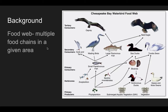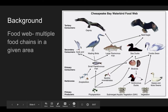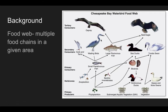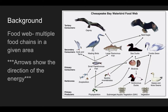We also know about food webs. A food web is multiple food chains in a given area. Here is a food web of the Chesapeake Bay water bird food web. We start out with some vegetation, either on land or in the water, and go to ducks and bivalves, up to swans and sea ducks, and eventually to eagles and osprey. Again, arrows show the direction of the energy. We do not have the osprey giving its energy to the large piscivorous fish — we have the piscivorous fish giving its energy to the osprey.